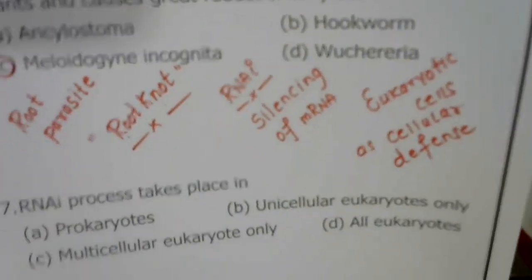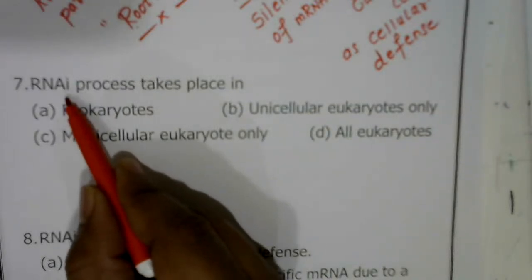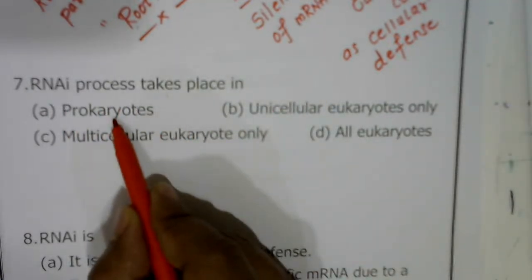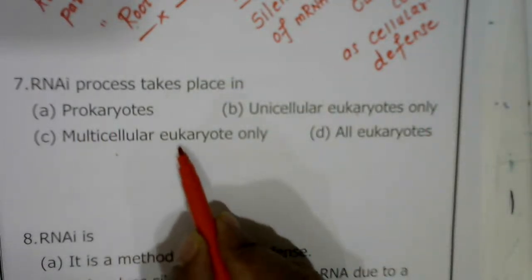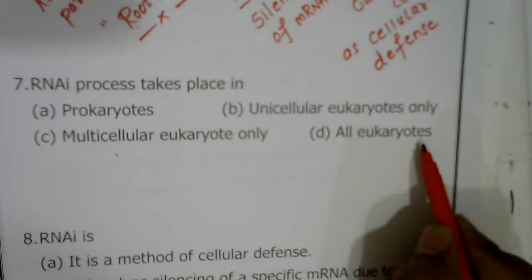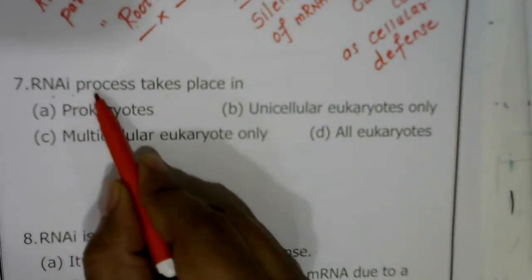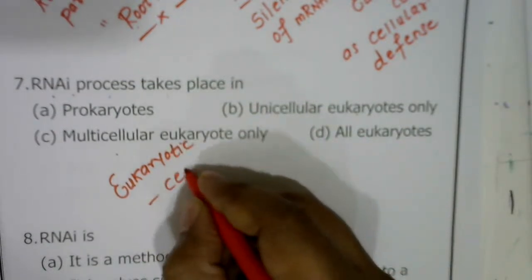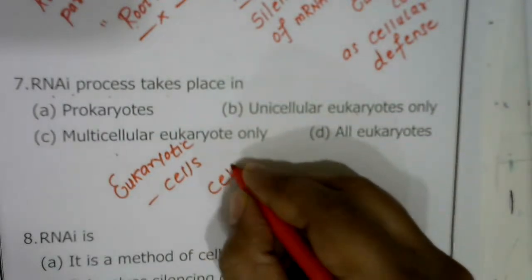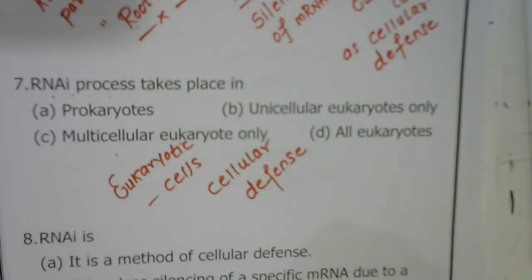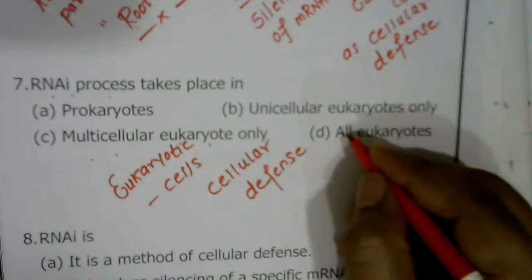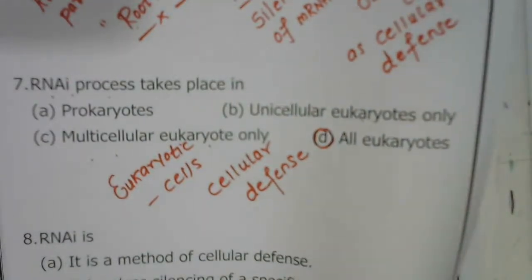Question seven: RNA interference — where I stands for interference — is a process that takes place in prokaryotes, unicellular eukaryotes only, multicellular eukaryotes only, or all eukaryotes? RNA interference occurs in all eukaryotic cells as a cellular defense mechanism, occurring in both multicellular and unicellular eukaryotes. The correct answer is D — all eukaryotes.